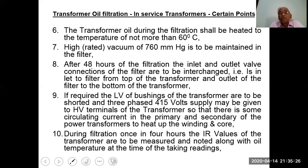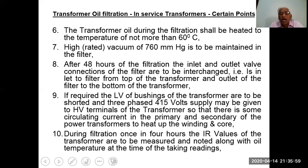Maintain a high-rated vacuum of 760 mm of mercury in the filter. After 48 hours of filtration, interchange the inlet and outlet valve connections — that is, the inlet becomes from the top of the transformer and the outlet goes to the bottom. The LV bushings of the transformer are to be shorted, and 3-phase 450V supply may be given to the HV terminals so there is circulating current in the primary and secondary to heat up the windings and core during filtration.